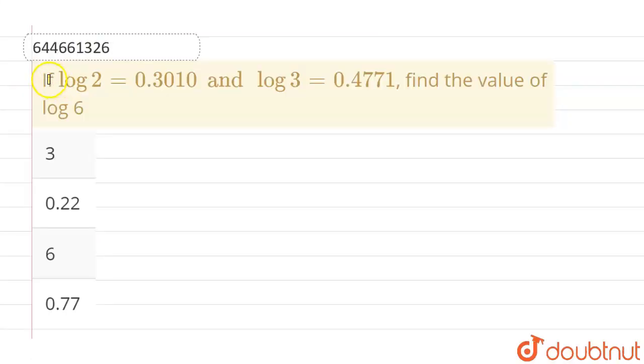Hello everyone, if we talk about this question, the given question is if the value of log 2 equals 0.3010 and value of log 3 is 0.4771, then we have to find out the value of log 6. The given options are 3, 0.22, 6, and the last option is 0.77.